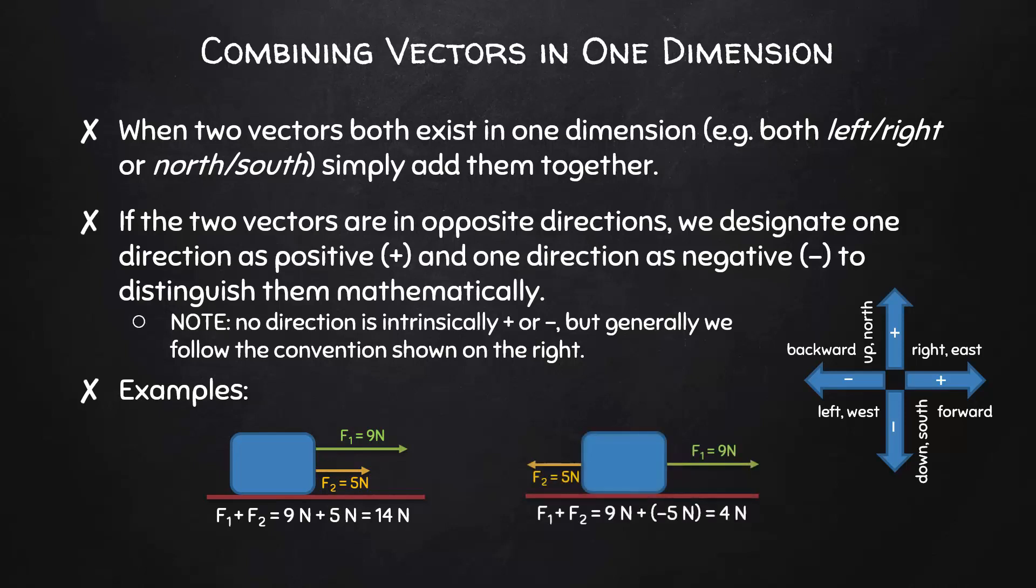In this next example, however, the forces are in opposite directions. We'll follow the convention and call the force to the left negative 5 newtons, and then we can add them. 9 newtons plus negative 5 newtons is 4 newtons.